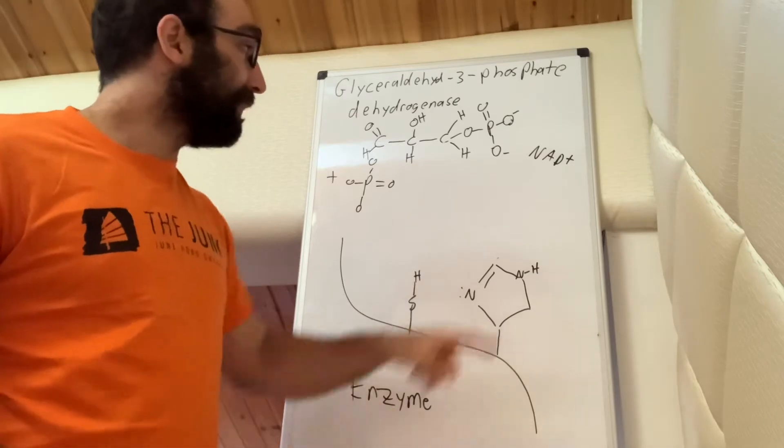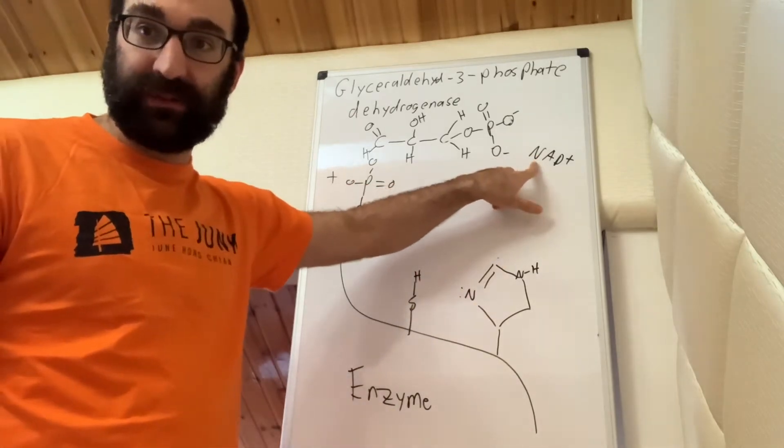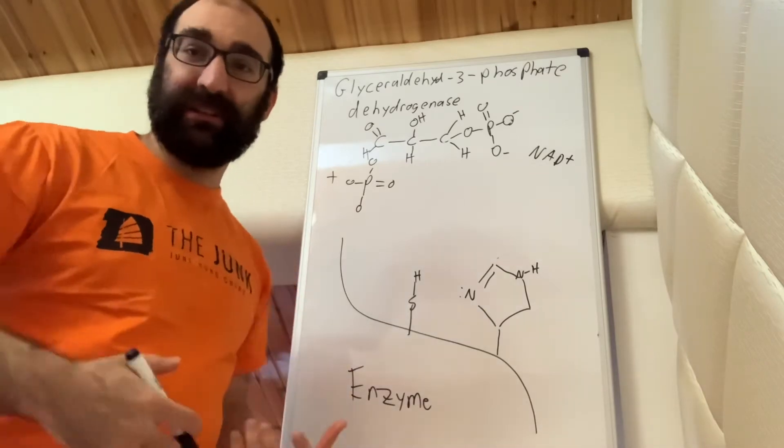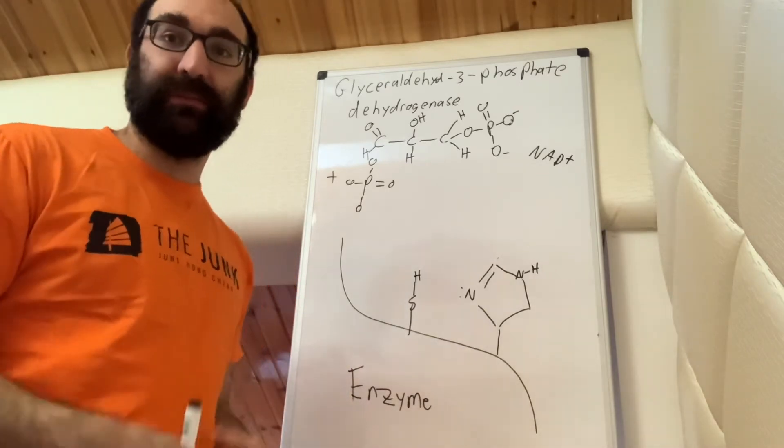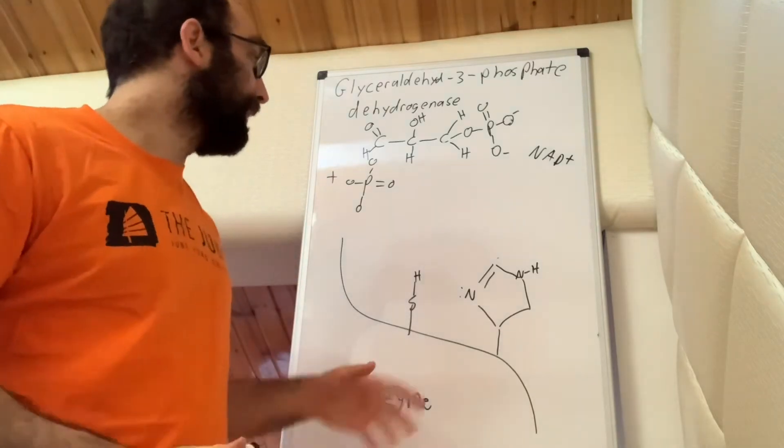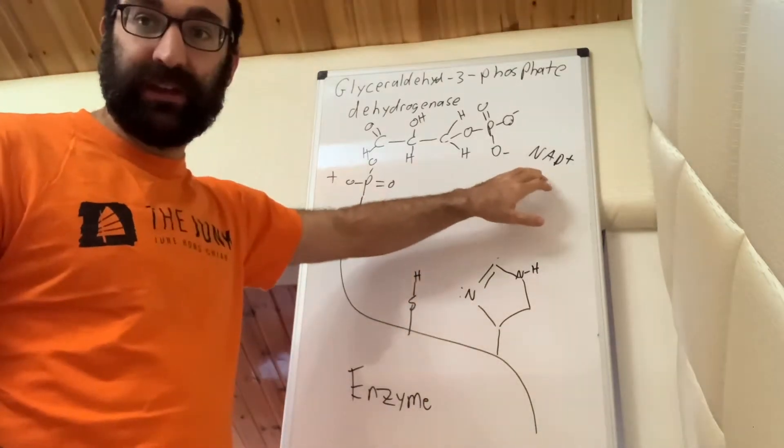But what does happen is this NAD positive here wants to become NADH, and you could think about this and the world doesn't like to have charges on things. Anytime there's a charge on something it wants to get rid of that charge. And we're gonna use the coupling of this in the third step.